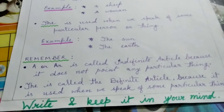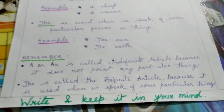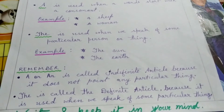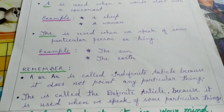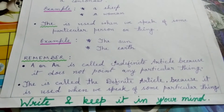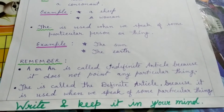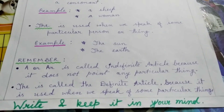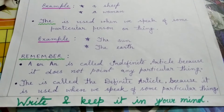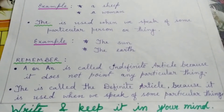Ab remember — humein kya cheez yaad rakhna hai? A and AN are called indefinite articles because they do not point to any particular thing. A aur AN ko hum indefinite article boltay hain kyunki yahaan par kissi bhi ek particular thing ko point out nahi kiya jaata. Second, The is called the definite article because it is used when we speak of some particular thing. The ko definite article boltay hain kyunki jab hum kissi ek particular cheez ke baare mein baat kar rahay hain, tab 'the' ka use hota hai.